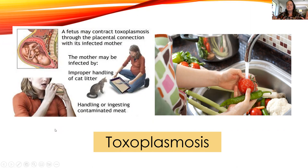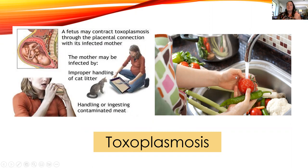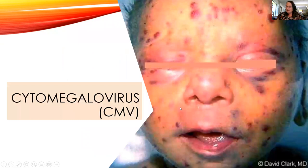Toxoplasmosis is an infection spread in the feces of cats. Importantly, if you have a completely indoor cat, it's not possible to have toxoplasmosis — it's only outdoor cats that come in contact with wild animals. You can also encounter toxoplasmosis through unwashed vegetables if cats have used gardens as a litter box. Proper handling of cat litter is recommended, especially for indoor-outdoor cats.